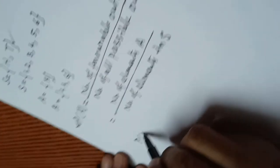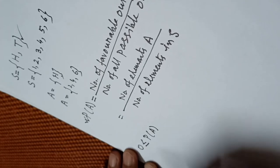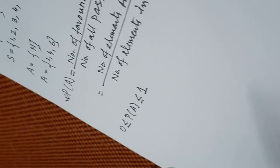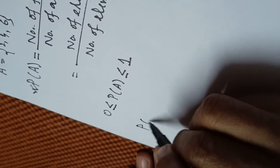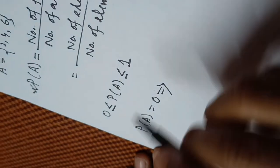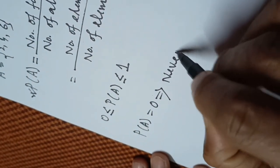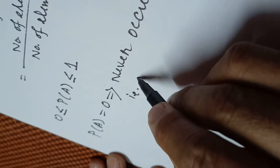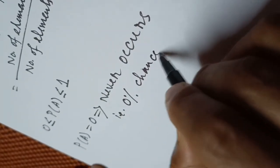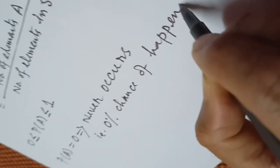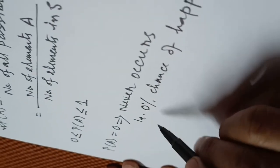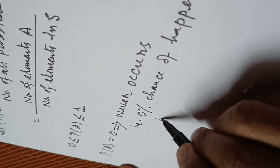The probability of any event A always lies between 0 and 1. When the probability of an event is 0, it means this event never occurs — there is 0% chance of happening. This type of event is called an impossible event.